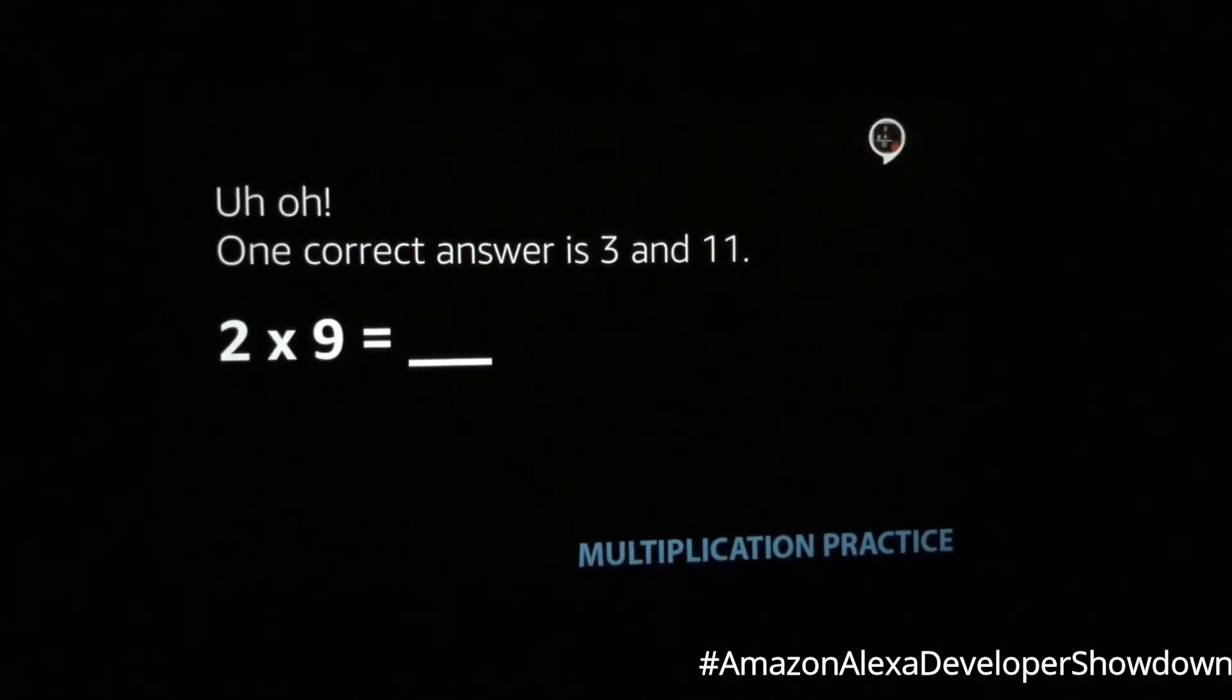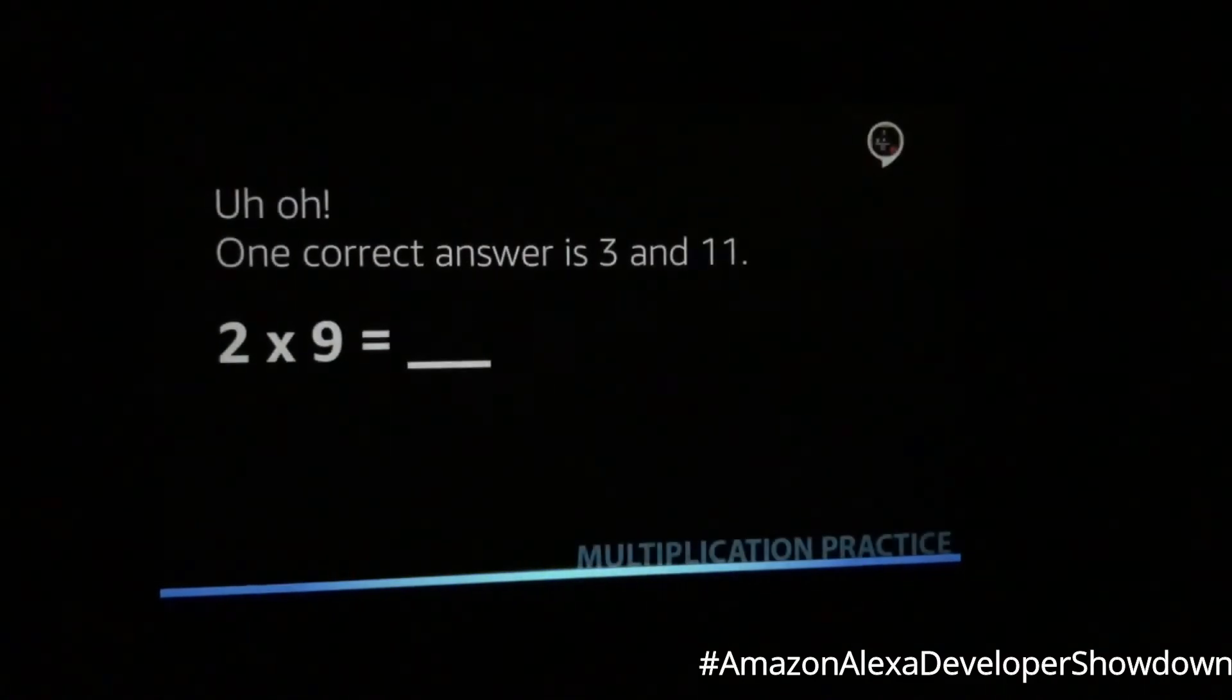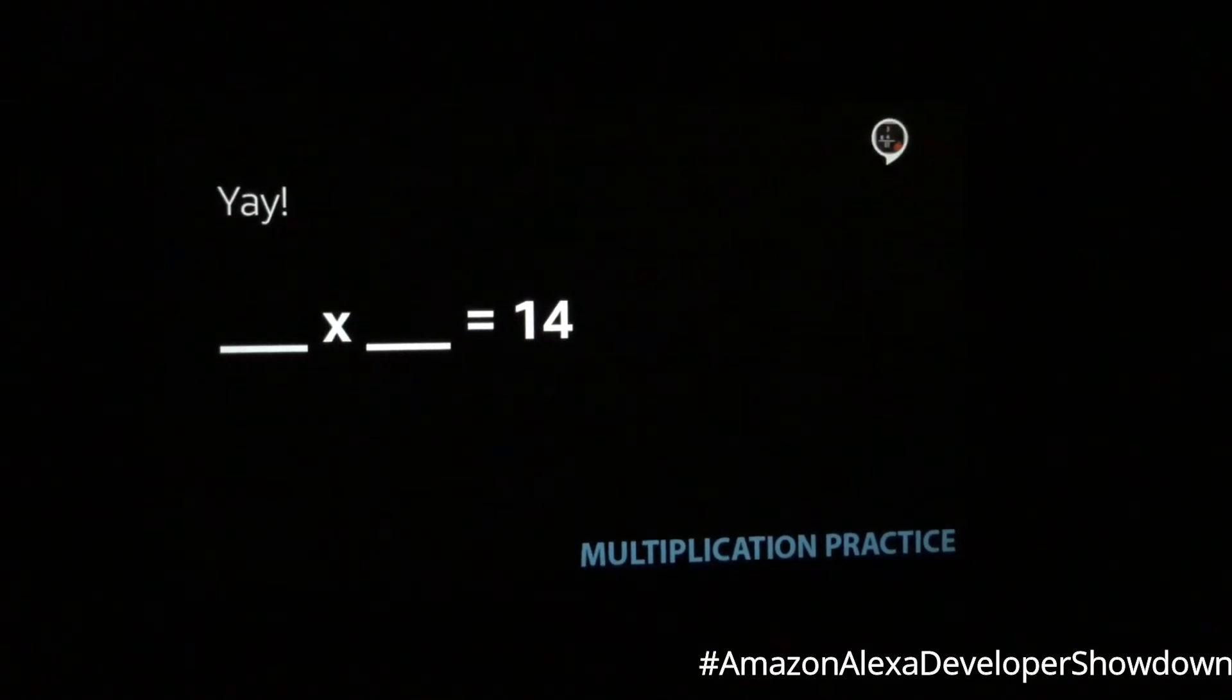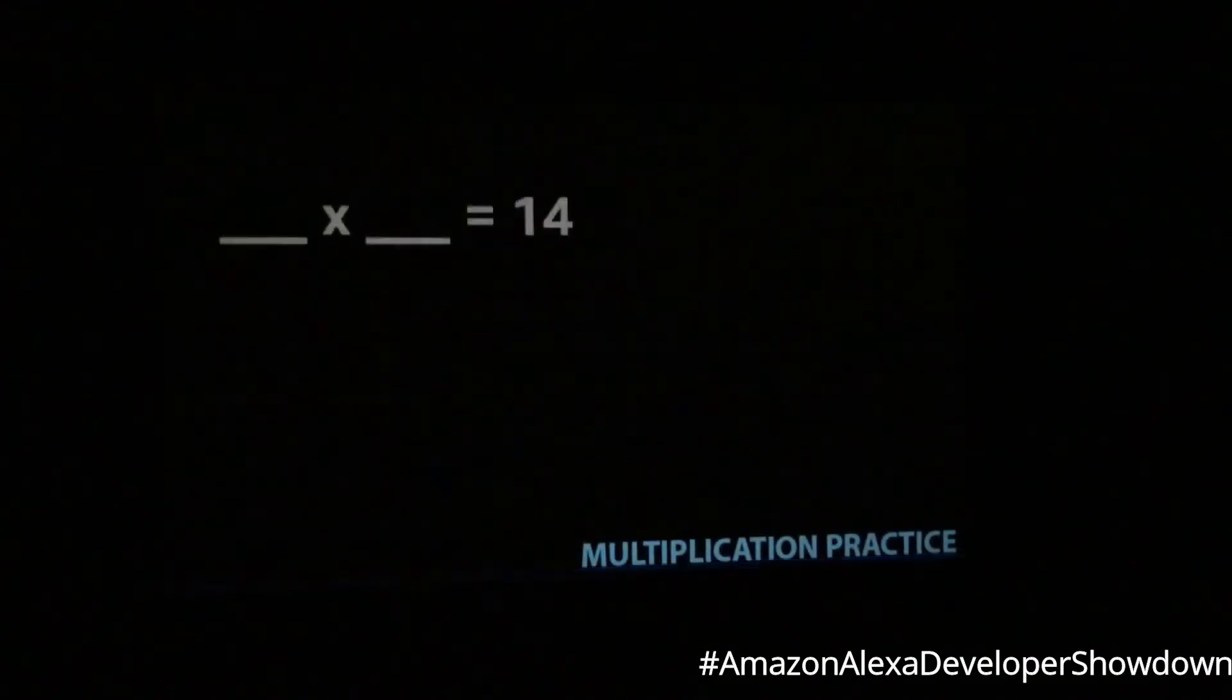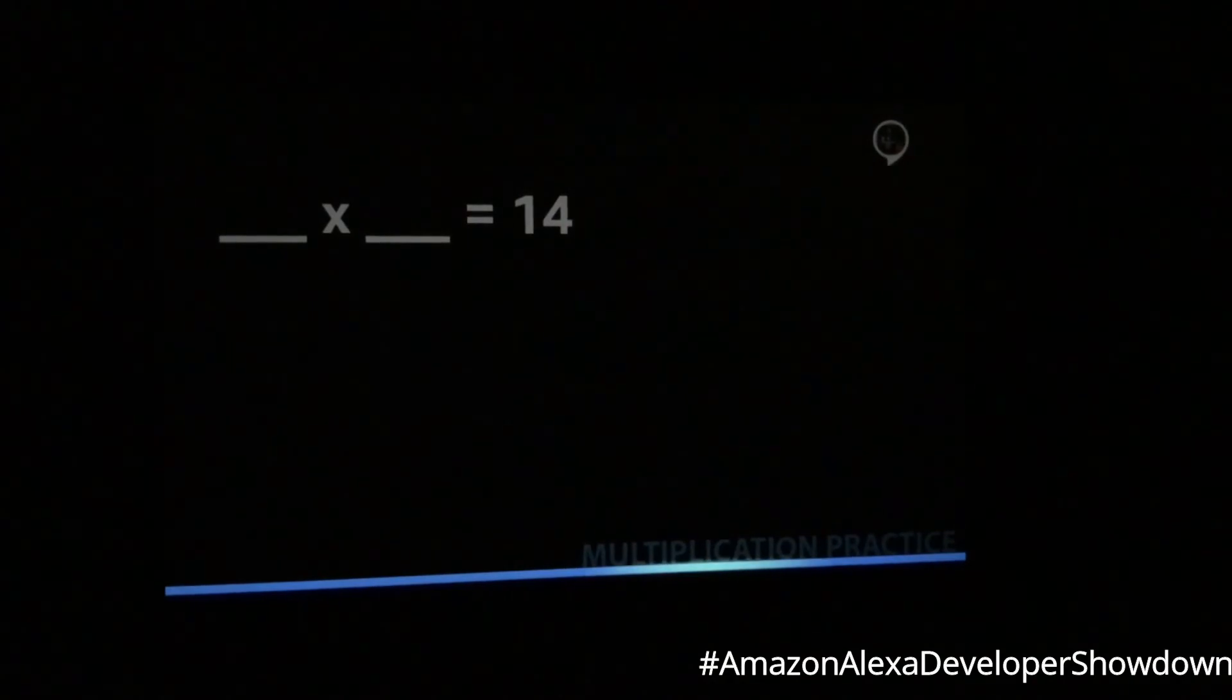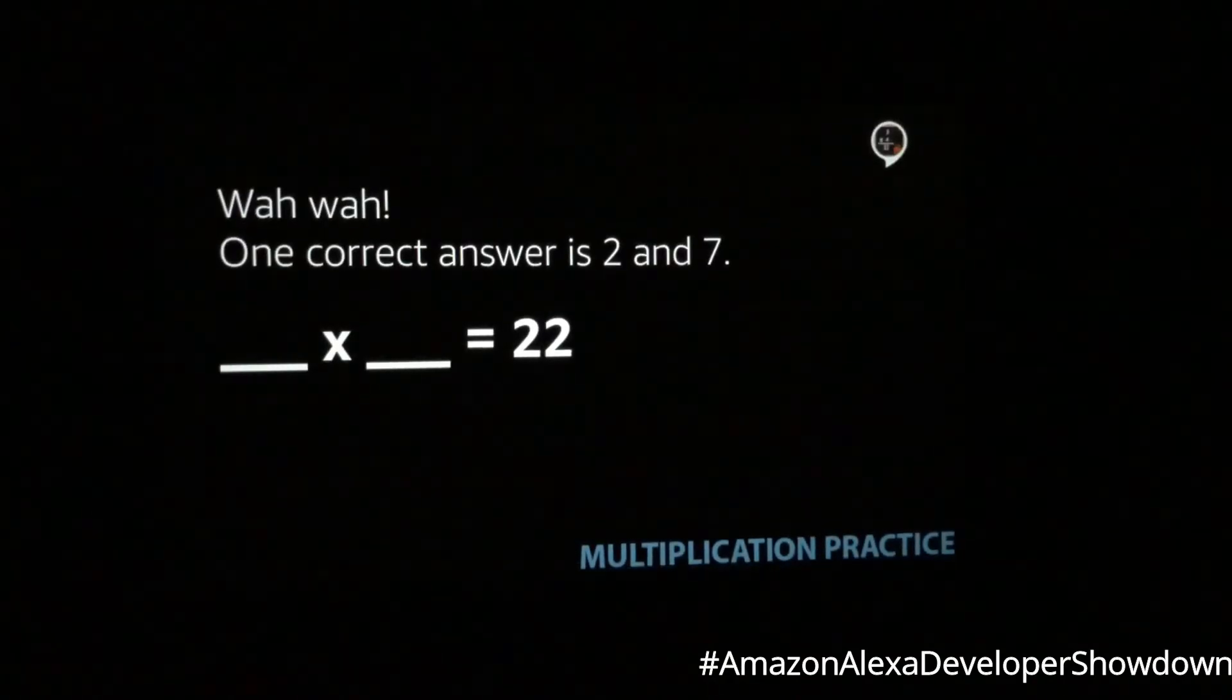What is 2 times 9? 18. Yay! What two numbers multiplied together equals 14? Would you please repeat that? What two numbers multiplied together equals 14? I don't know. Wah-wah. One correct answer is 2 and 7.